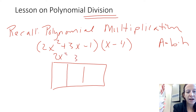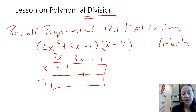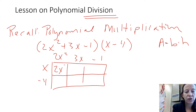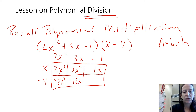We put 2x squared, 3x, and negative 1 on the base, and for our height we have x minus 4. Then I can find the area by finding the area of each individual box. So 2x squared times x gives me the area of the first box, 3x times x gives me the next box, and so forth. We add all the boxes up to find the area of the whole thing, and that becomes the product.